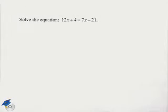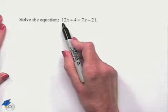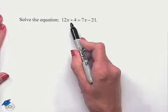Now let's look at solving a linear equation. Solve the equation 12x + 4 = 7x - 21. In looking at the equation, we notice that we have a term including X on the left-hand side and a term including X on the right-hand side.